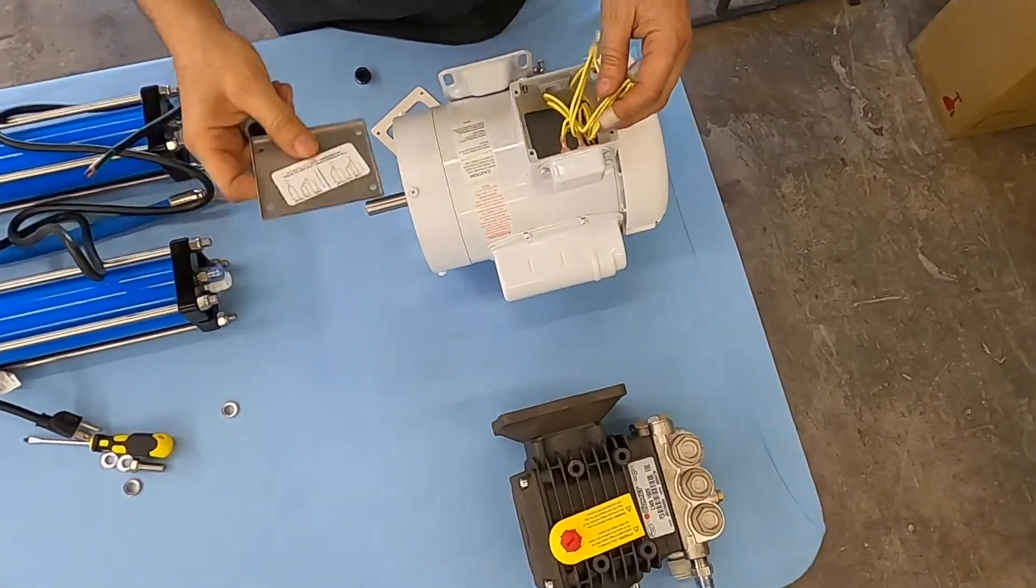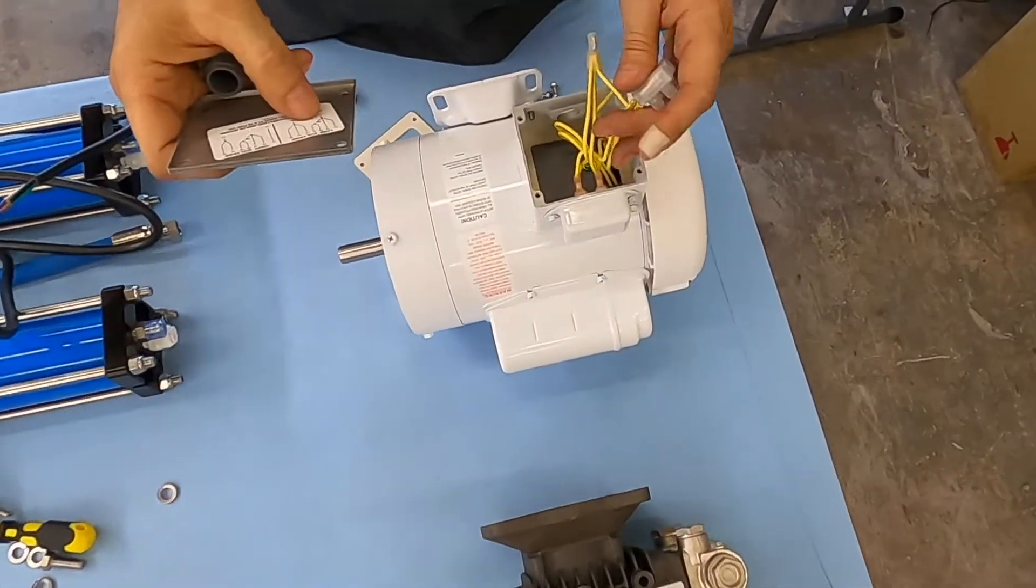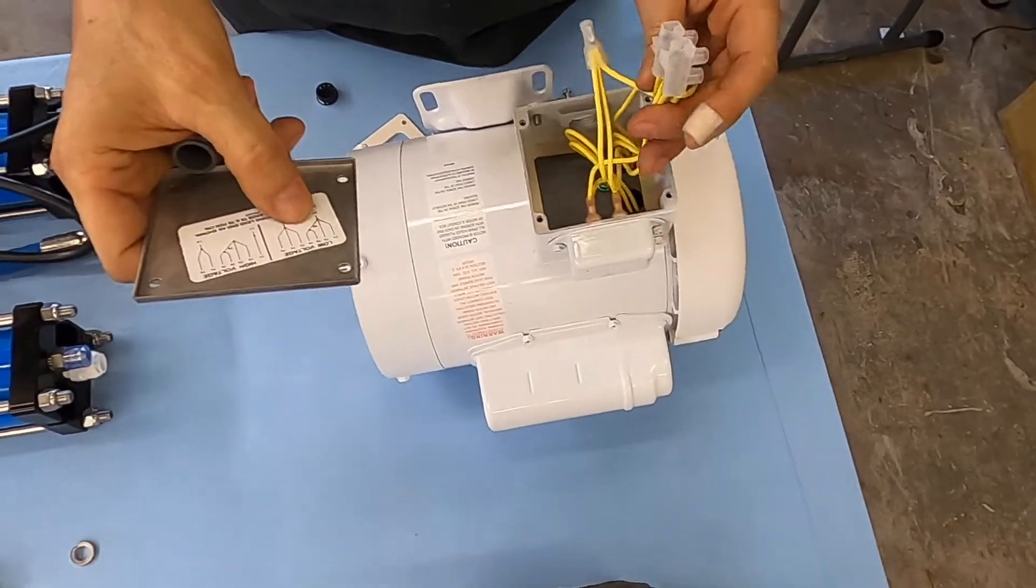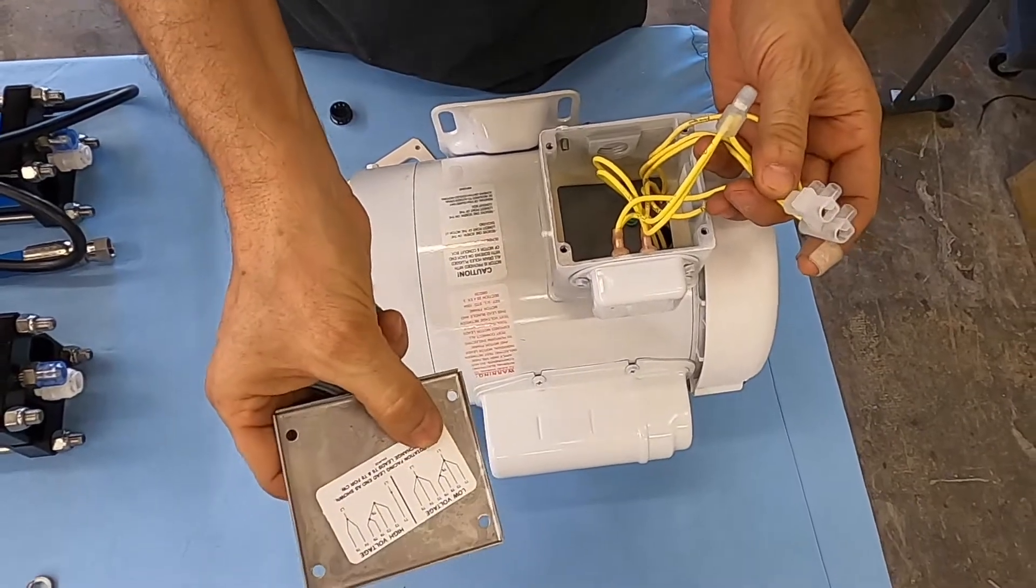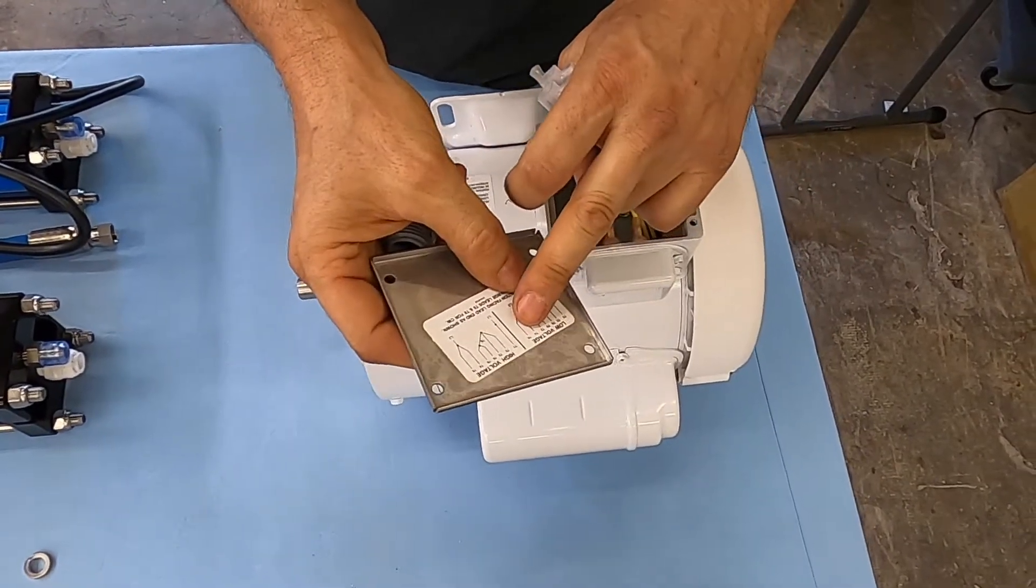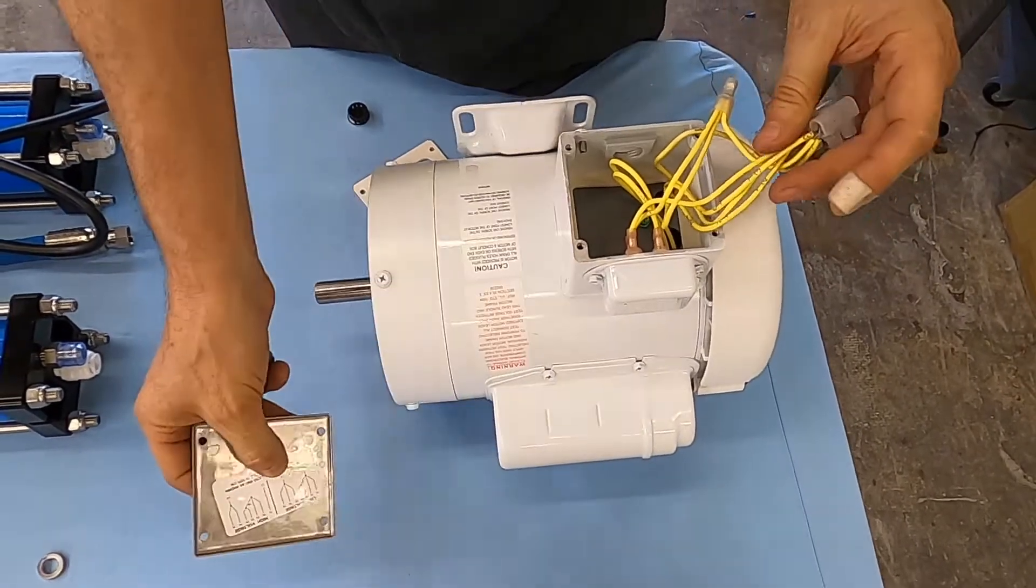And according to this diagram, we need to connect... we're doing a low voltage installation, and we're connecting 1, 3, 8, and 9, and that goes to line 1, and then 2, 4, and 5, that goes to line 2.